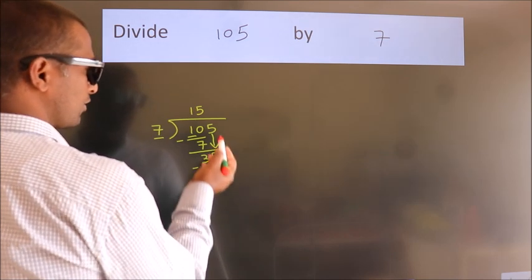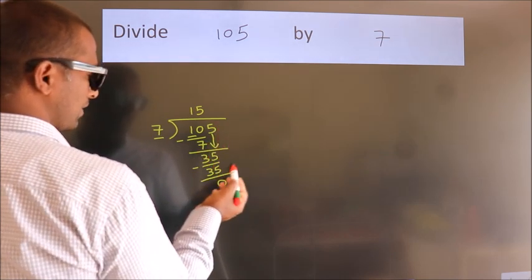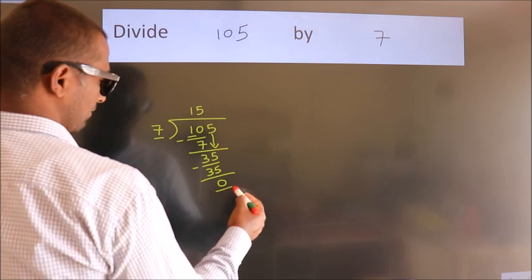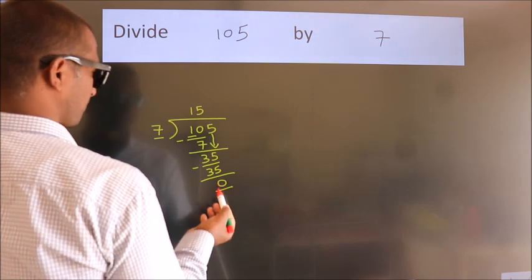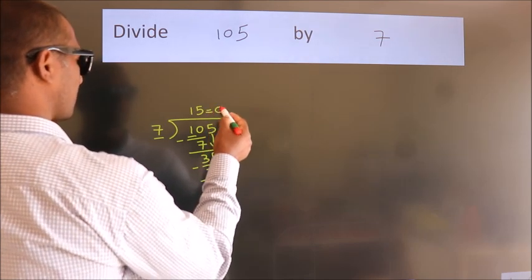After this, no more numbers to bring it down. And we got remainder 0. So, this is our quotient.